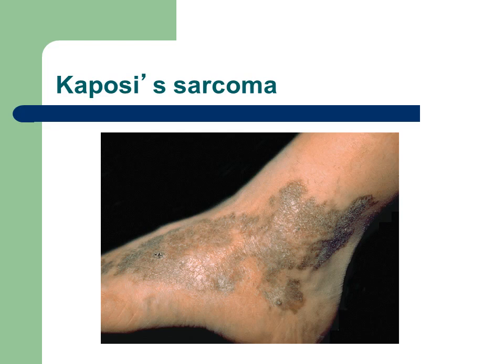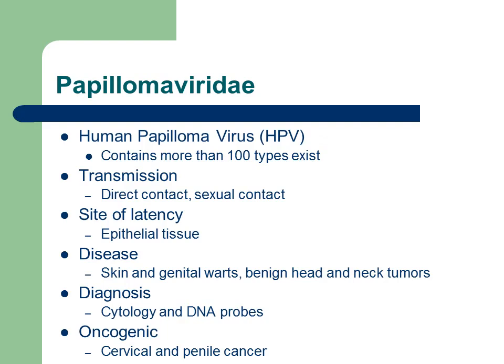Here is a typical lesion that you would see in an individual with Kaposi's sarcoma. It used to be more common in older men born in the Mediterranean area, but now you can find it anywhere, more commonly in individuals with HIV.